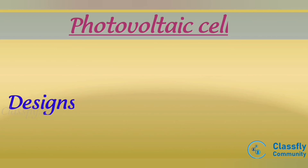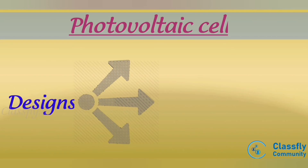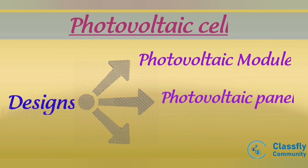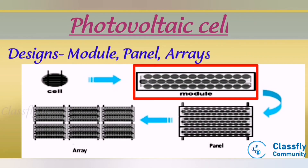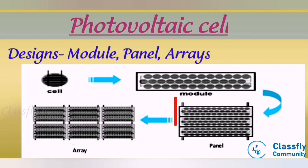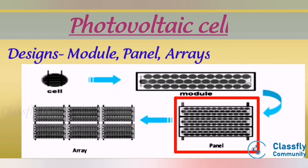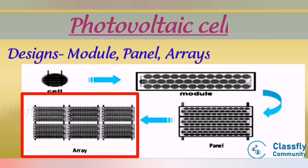Photovoltaic cell designs mainly involve three types: photovoltaic module, photovoltaic panel, and photovoltaic arrays. A photovoltaic module is a number of photovoltaic cells electrically connected to each other and mounted in a support structure or frame; its voltage is 0.5 to 0.6 volts. A photovoltaic panel is multiple modules electrically connected and mounted in a support structure or frame; its voltage is 12 to 18 volts and it contains 27 to 36 cells. Photovoltaic arrays are the complete power-generating unit, consisting of a number of photovoltaic panels electrically connected and mounted in a frame.